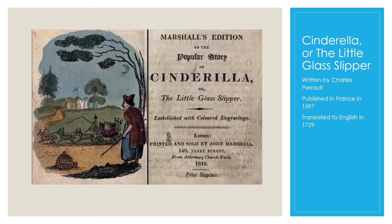Like the ancient Chinese version, the beloved Disney version uses a shoe to identify Cinderella, but this version of the story actually originated in France in 1697. It was translated into English in 1729. In this story, written by Charles Perrault, Cinderella gets to go to the ball in a magical pumpkin carriage thanks to the help of her fairy godmother.